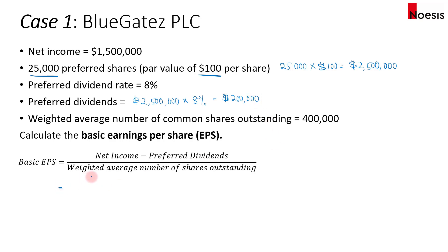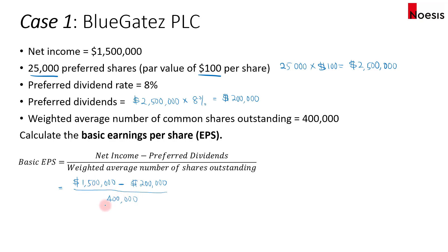We'll then do our calculation: the net income is $1.5 million, minus $200,000 in preferred dividends, and then we divide by 400,000 shares. So that's $1.3 million divided by 400,000 shares, which gives us a basic EPS of $3.25.